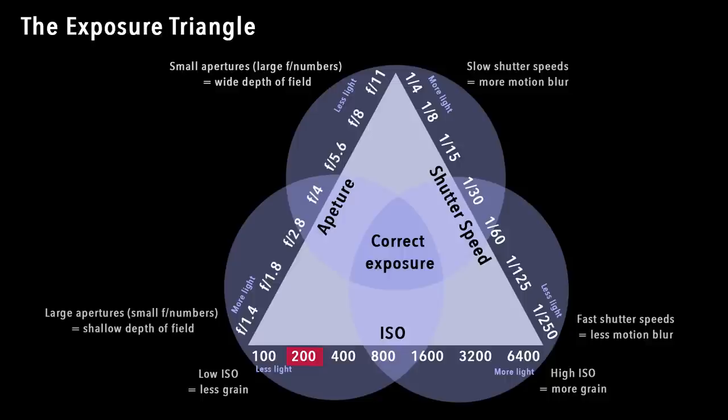Say for example you're shooting a subject matter and you have your ISO set to 200, and your camera tells you that for that given subject matter your exposure needs to have your shutter speed at 1 over 125 and your aperture at f2.8. Now if you change any of those variables, the other variables need to change to accommodate it.